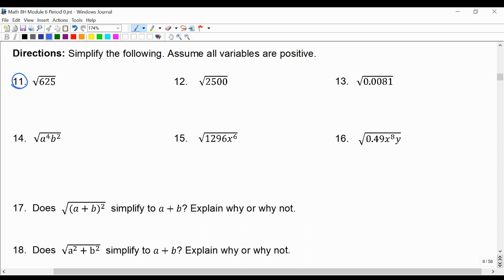We can start to see the square root symbol showing up which sort of looks like long division. We're going to look at the square root of 0.0081 and we're going to also look at the square root of a to the fourth b to the second.